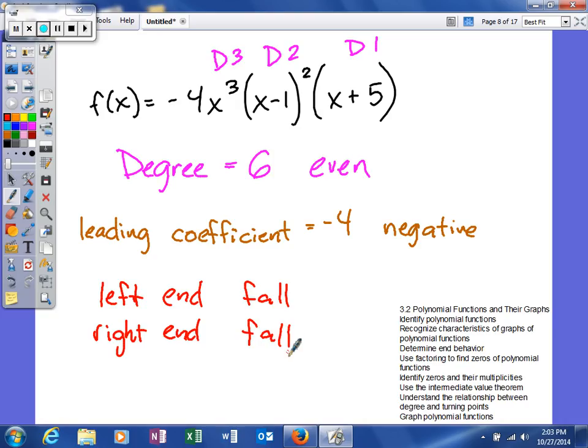And then the right end will also fall. You can see because we have an even degree, both sides have to do the exact same thing. And because the leading coefficient is negative, they'll both fall. This is an example of end behavior.